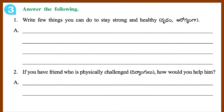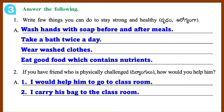Section 3: Answer the following questions. Question 1: Write a few things you can do to stay strong and healthy. Answer: Wash hands with soap before and after meals. Take a bath twice a day. Wear washed clothes. Eat good food which contains nutrients.